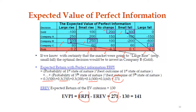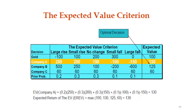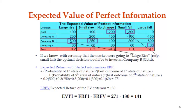We already computed EREV in the previous slide — the maximum of the expected value column — which equals 130. So EVPI equals ERPI minus EREV: 271 minus 130 equals 141. This difference of 141 is the EVPI.